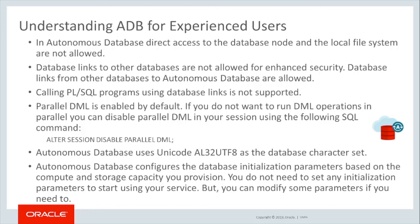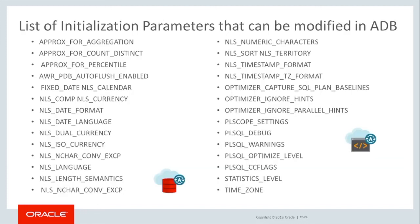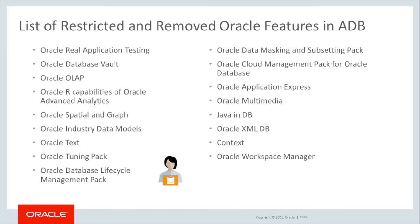Autonomous Database configures the database initialization parameters based on the compute and storage capacity you provision. You do not need to set any initialization parameters to start using the service, but you can modify some parameters if you need to. Because Autonomous Database is automatically managed, some initialization parameters can be changed and some cannot. In this slide are listed all the parameters that can be modified in Autonomous Database. Many features of the Oracle Database are restricted or removed from Autonomous Database for several reasons, ranging from providing an optimized environment to risk of security breaches. Please note that this list is a point in time list and restrictions may be added or removed as the service evolves.